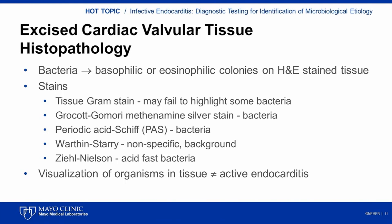A tissue Gram stain is commonly used but may fail to highlight some organisms, particularly in the setting of prior antibiotic administration. A Grocott-Gomori methenamine silver stain, while classically used for the identification of fungi, may offer increased sensitivity for identification of bacteria in valve tissue. Additional stains that are useful in some settings include Warthin-Starry, Ziehl-Neelsen, and periodic acid-Schiff stains. Like Grocott-Gomori methenamine silver, periodic acid-Schiff will highlight most bacteria and may offer increased sensitivity over tissue Gram stain. Periodic acid-Schiff with diastase is also the stain of choice for visualizing Tropheryma whipplei within foamy macrophages in cases of Whipple endocarditis.